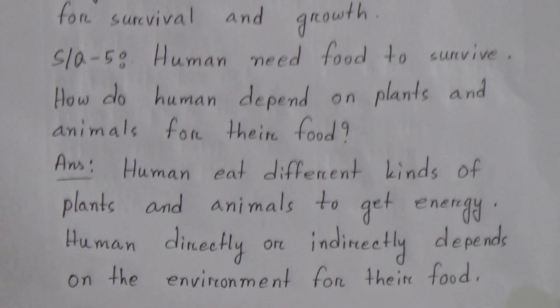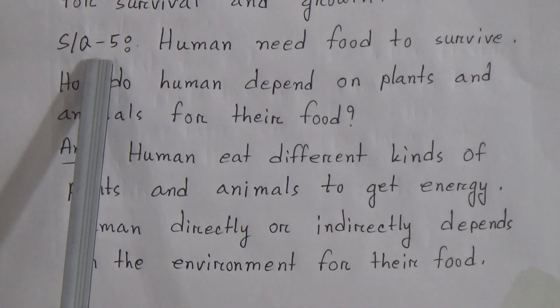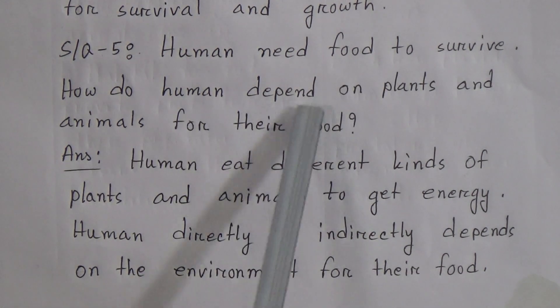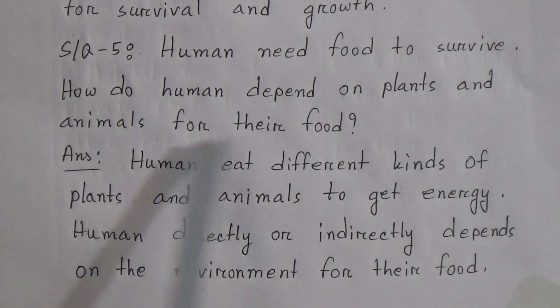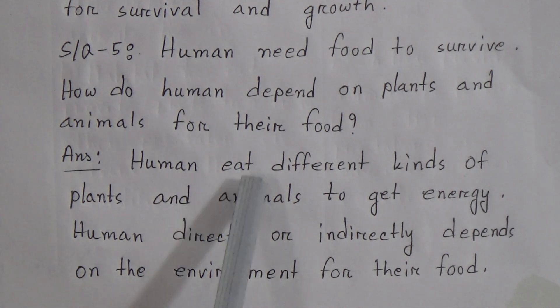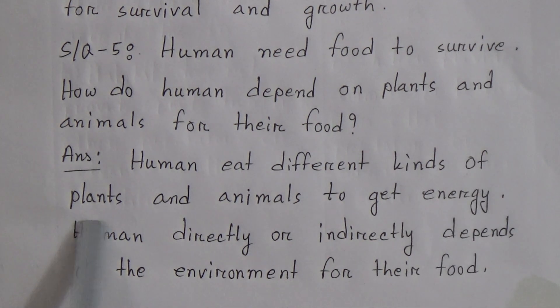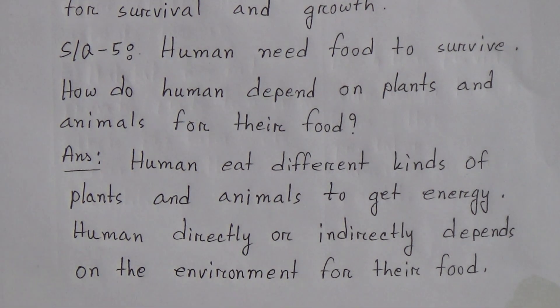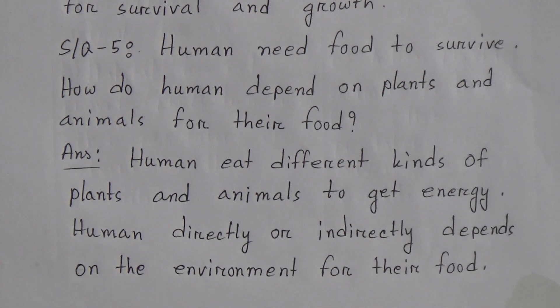Short question 5: Humans need food to survive. How do humans depend on plants and animals for their food? Answer: Humans eat different kinds of plants and animals to get energy. Humans directly or indirectly depend on the environment for their food. These five short questions and answers were today's topic.